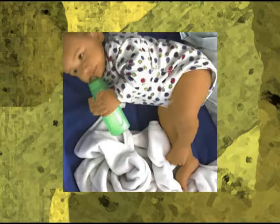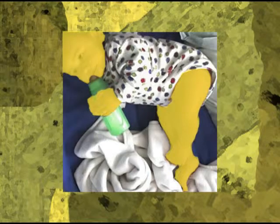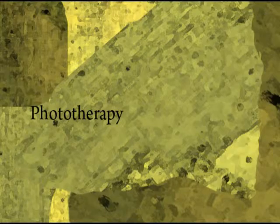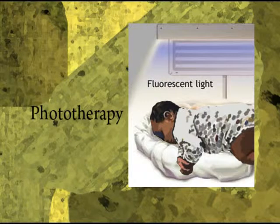If there is a newborn with jaundice, the baby's body will take care of it within the first two weeks. But if it's not better within two or three weeks, there are ways to treat it and cure it. One way is phototherapy — a treatment with a special light that helps rid the body of bilirubin by altering it or making it easier for the liver to get rid of.